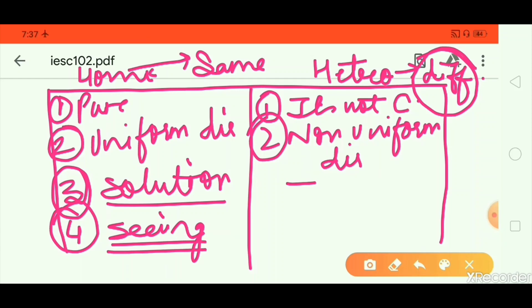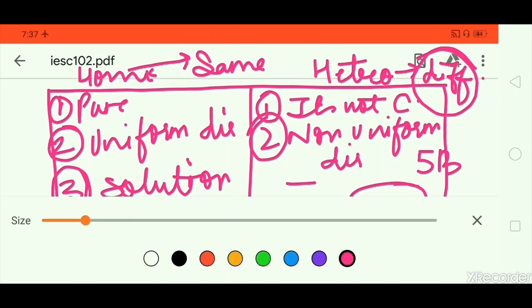Another difference: homogeneous mixture is also known as solution. Heterogeneous has no other name. Fourth difference: in homogeneous, you can't judge by seeing. But in heterogeneous, we can judge by looking at it.